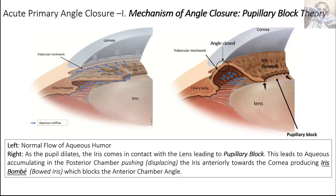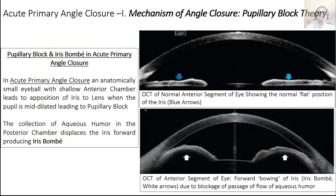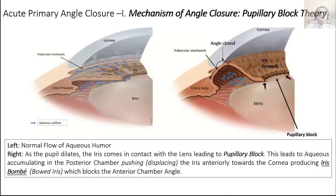The aqueous starts collecting in the posterior chamber because it can't flow into the anterior chamber — the passage is blocked. Aqueous in the posterior chamber pushes the iris forward towards the anterior chamber angle. The iris is a very flimsy structure and can easily be pushed or pulled. If it creates a grade 1 or grade 0 angle blocking the trabecular meshwork, there is a sudden and dramatic rise in intraocular pressure. This is the pupillary block theory.